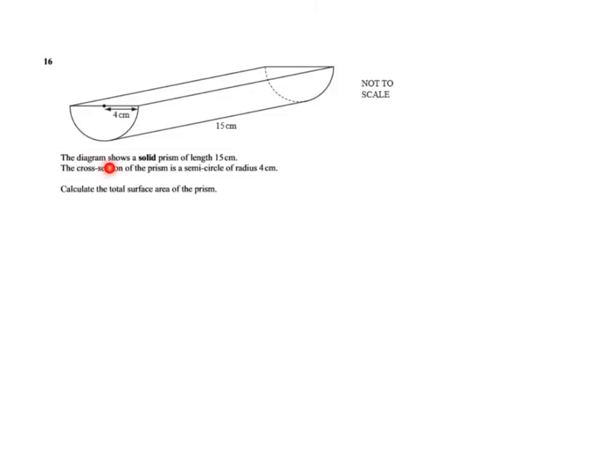So what's going on? It says the diagram shows a solid prism of length 15 cm. The cross section of the prism is a semi-circle and the radius is 4 cm. And what do we have to do? We have to calculate the total surface area, so the area of all the surfaces of the entire prism.